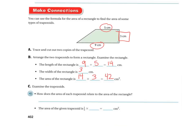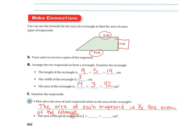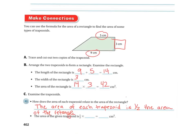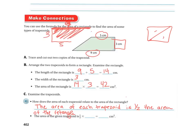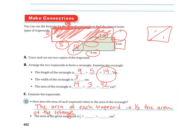The area of the rectangle is 14 times 3, which equals 42. How does the area of the trapezoid relate to the area of the rectangle? The area of each trapezoid is half the area of the rectangle. I'm putting two trapezoids together — this side is 5, this side is 9, and this side is 3. So 5 plus 9 is 14, and 14 times 3 gives 42 square centimeters for the full rectangle. But since I just want one trapezoid, I take half of 42, which is 21 centimeters.